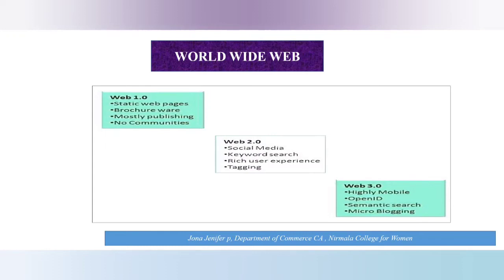Next comes Web 2.0, also called the Participative Social Web. It features interaction with the ability of user-generated content, usability, and improved interface. Its essentials include social media, keyword search, rich user experience, and tagging.